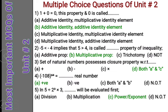Question 1: 1 plus 0 is equal to 0 — this property of 0 is called what? As we know that any number added with 0, the result will be that number. This property is called additive identity, and 0 is called the additive identity element. The correct option for question 1 is B.